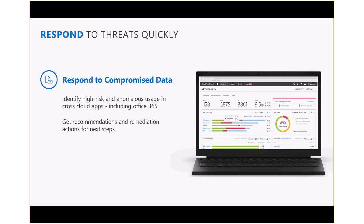Cloud App Security allows you to respond to threats in third-party SaaS applications and Office 365 through the ASM capability quite rapidly. You can see high-risk usage and anomalous activities. It extends well beyond Office 365 — a whole plethora of third-party SaaS applications can be protected with Cloud App Security. It has extensive reporting and a very rich alerting mechanism to signal when there's suspicious activity, anomalous activity, high-risk usage, or sharing of a sensitive file detected.